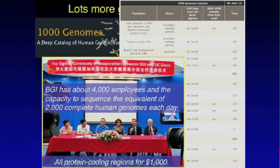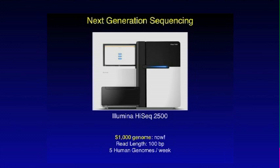BGI doesn't just do human genomes — they do trees, rice, plants, and other things. But if they were just doing human genome sequences, they could do 2,000 a day. Even in our own genome center at the university, we have the Illumina HiSeq 2500, which is the state of the art right now. This machine can do about five genomes in a week, and with the new chemistry, the price should come down to about $1,000 for a full genome.